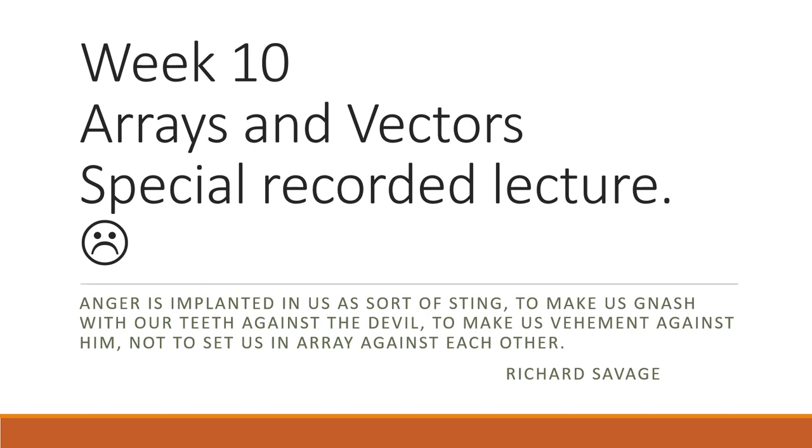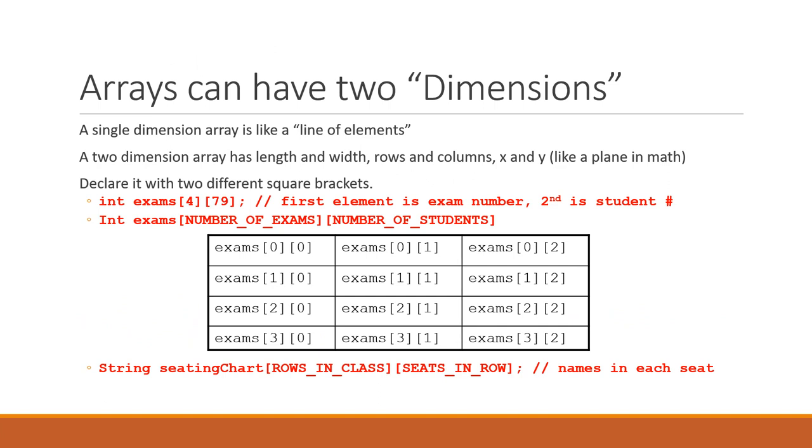An array can have two dimensions. We typically already have a single dimension in an array, like a bunch of exam scores or weights or many of the things we've been looking at.